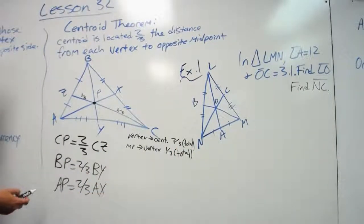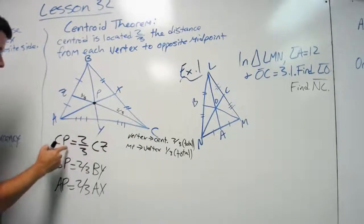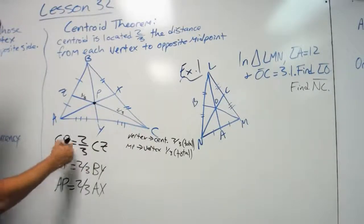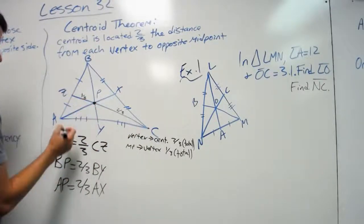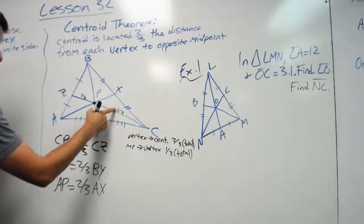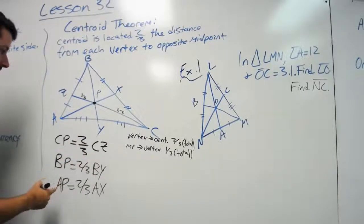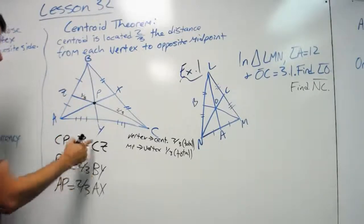So if I broke it down using letters, that would mean CP equals two-thirds of the total distance, meaning CZ. CP equals two-thirds of CZ. Or BP equals two-thirds of BY.